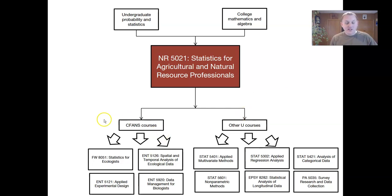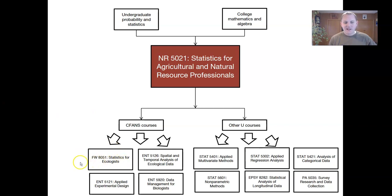Here are a couple of great courses within CFAN — the College of Food and Agriculture and Natural Resource Sciences, where many of you are homed. The first one I'll mention is FW8051, which is a Statistics for Ecologists class. That's a pretty good class, especially if you want to go into Bayesian statistics, which we have not really covered in this class, so I encourage you to look at FW8051.